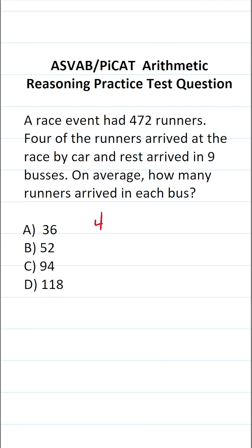So we know 472 runners participated in this race, and four of them arrived by car, and the rest arrived by bus. To find the number of runners who arrived by bus, we're going to do 472 minus 4.